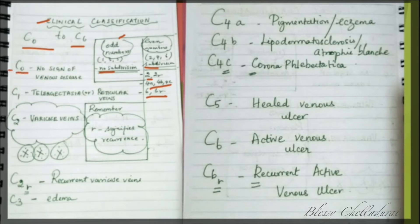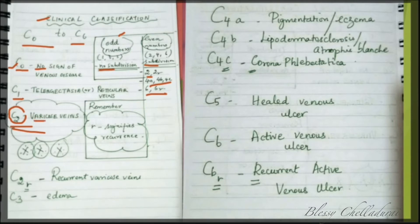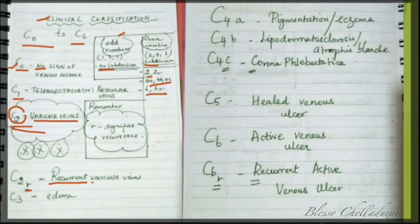C0 signifies no sign of any venous disease. C1 means telangiectasia or reticular veins. C2 signifies varicose veins — this is a very important point and a frequently asked question in NEETPG. C2R, where R stands for recurrent, signifies recurrent varicose veins.